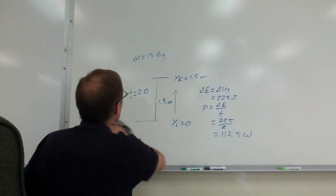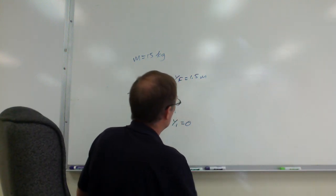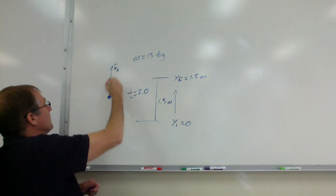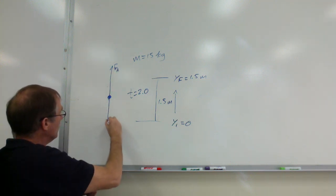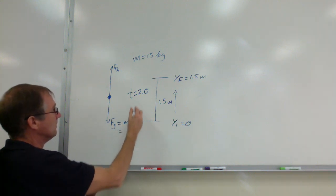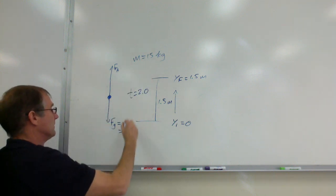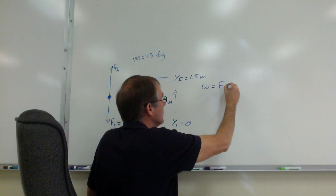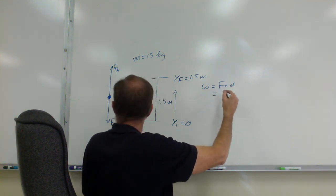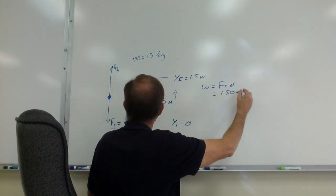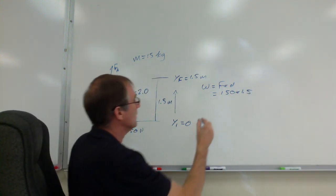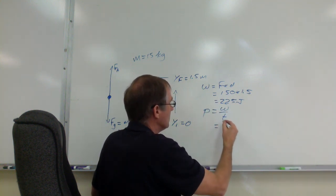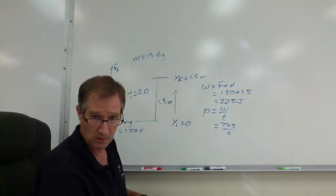Another way to calculate it: the work done by the lifting force equals force times distance. Drawing a force diagram, the lifting force equals the weight at constant speed — that's 15 times 10 equals 150 newtons. Work equals 150 newtons times 1.5 meters, which is 225 joules. Power equals work over time: 225 over 2 equals 112.5 watts — the same answer.